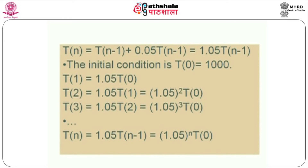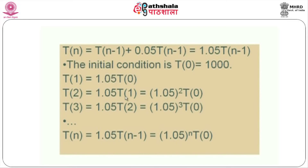The initial condition T(0) is going to be 1000. Since 5 percent is the compound interest, T(n) is going to be the previous value plus 5 percent interest. Therefore it comes to 1.05 × T(n-1). At the end of the first year it is 1.05 × T(0), and at the end of the second year it becomes 1.05 × T(1), which is 1.05 × T(0), giving 1.05² × T(0).